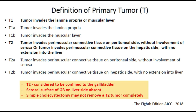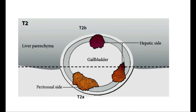To remember this: A is anterior, that is towards the peritoneal side, and B is back, that is towards the hepatic side. As you can see in the diagram, T2B is towards the hepatic side and T2A is anterior towards the peritoneal side. T2A has a better prognosis because there is an additional covering — the peritoneum. At the same depth of invasion on the hepatic side, it is T2B because there is no peritoneal covering, leading to early spread and metastasis of the tumor.